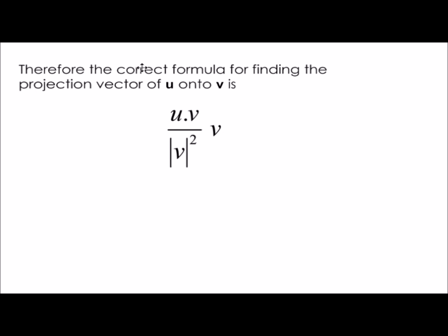So the formula for the dot product does not have a modulus around it when working out the projection vector.